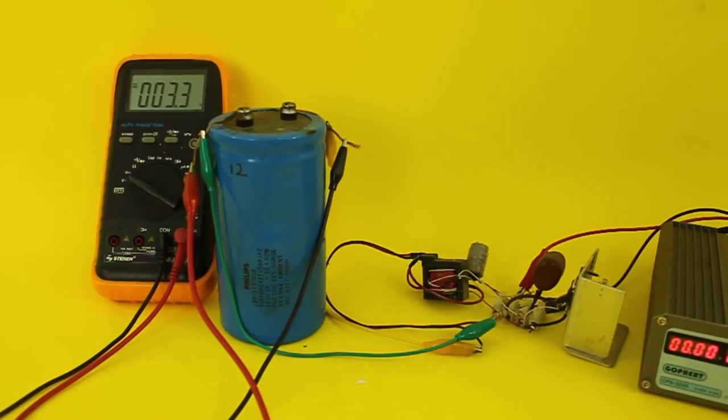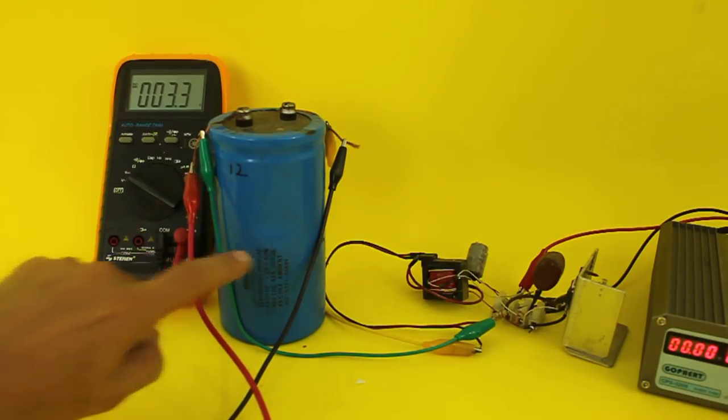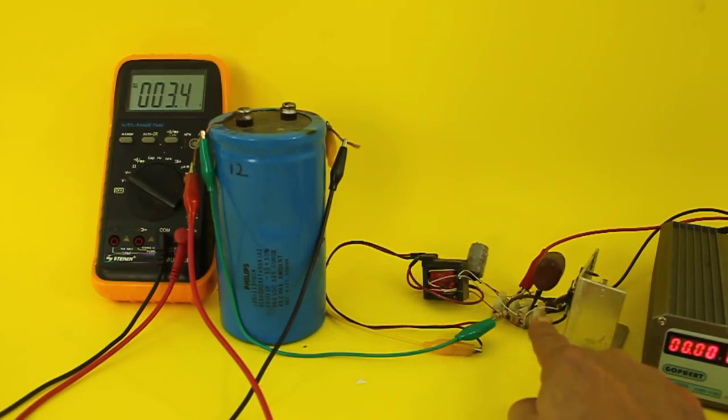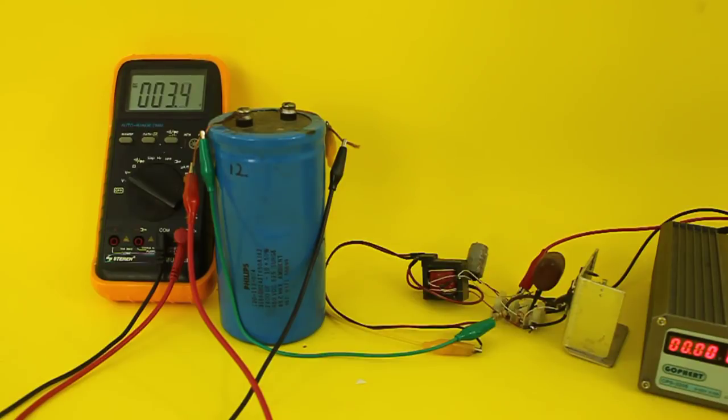Let me show you how the capacitor makes the aluminum foil explode. This is a 2400 microfarad capacitor at 450 volts. I will charge it using this high voltage power supply that I built some time ago. And I'm going to charge it up to 200 volts.